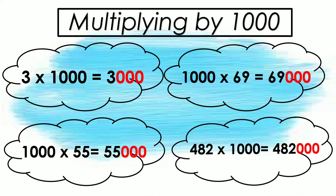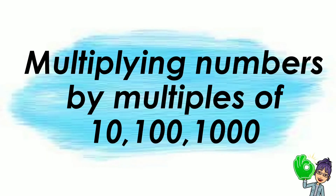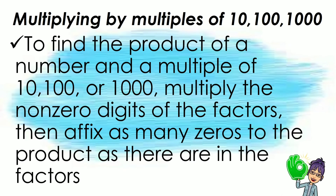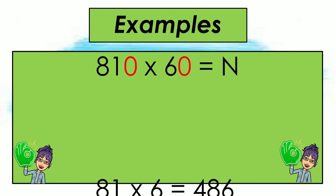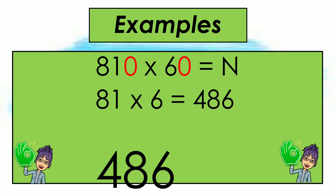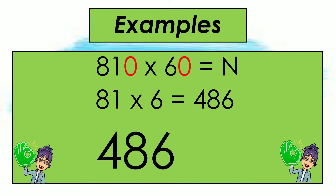Let us proceed to multiplying numbers by multiples of 10, 100, and 1,000. We multiply the non-zero digits of the factors, then add as many zeros to the product as there are in the factors. For example, 810 times 60: multiply the non-zero digits — 81 times 6 is 486. Since we have two zeros in our factors, write them at the end of 486. So the answer is 48,600.